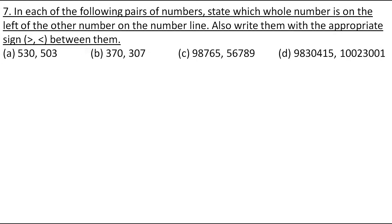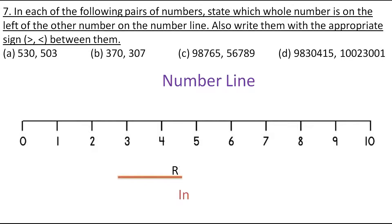Now let's move to the seventh question: In each of the following pairs of numbers, state which whole number is on the left of the other on the number line, and write them with the appropriate sign between them. According to the number line, as we move towards the right, the value of the number increases. So the smaller number lies to the left. To answer, we first find which is the smaller and which is the greater number.